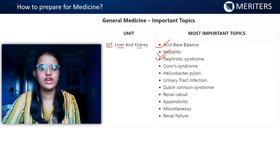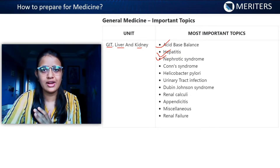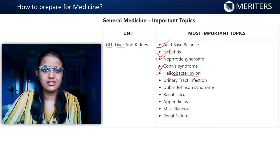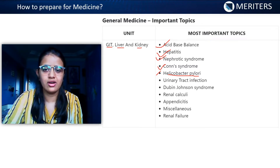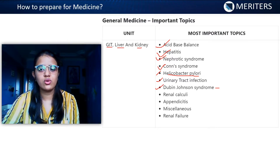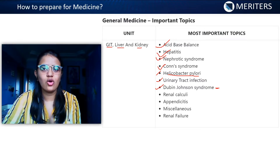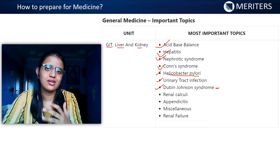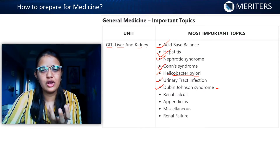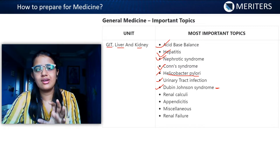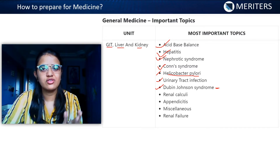Next is nephrotic syndrome — you need to know what causes liver failure and kidney failure. One important part is Conn's syndrome. Then you have Helicobacter pylori, which deals with ulcers — what antibiotic you can give for ulcers and other medications for H. pylori. Next is urinary tract infection and Dubin-Johnson syndrome. Along with Dubin-Johnson syndrome, it's important to know the different types of jaundice — hemolytic, obstructive — what increases and decreases, such as alkaline phosphatase, the effect on stercobilin/bilirubin, and what is the effect on urobilinogen. There is a good table in your textbook covering the different types of jaundice.